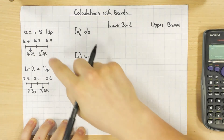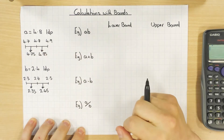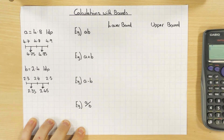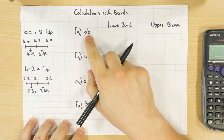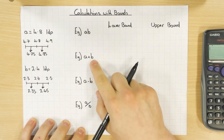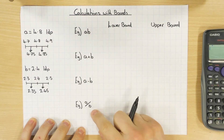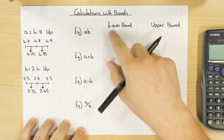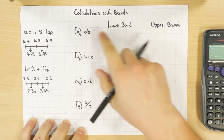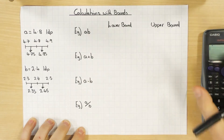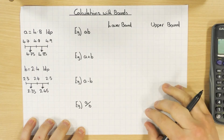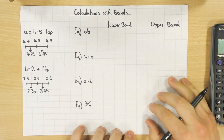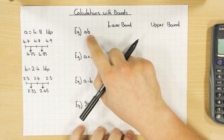Before doing any calculations, you need to work out the upper and lower bound of each number you've been given. You can be asked to multiply, add, subtract, or divide them, and you might be asked to work out the lower or upper bound of that calculation. Let's go through each of these cases.